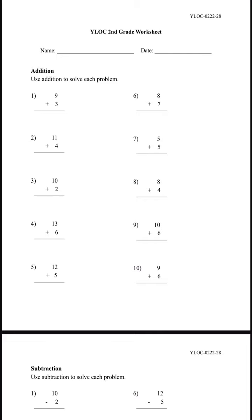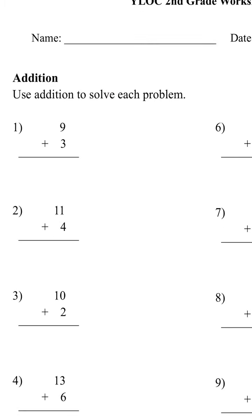Number 1, we have 9 plus 3. Counting up from 9: 10, 11, 12. So 9 plus 3 is 12. We don't put it like this. Instead, we have to put it like 2 and 1, so the 1's place can match.